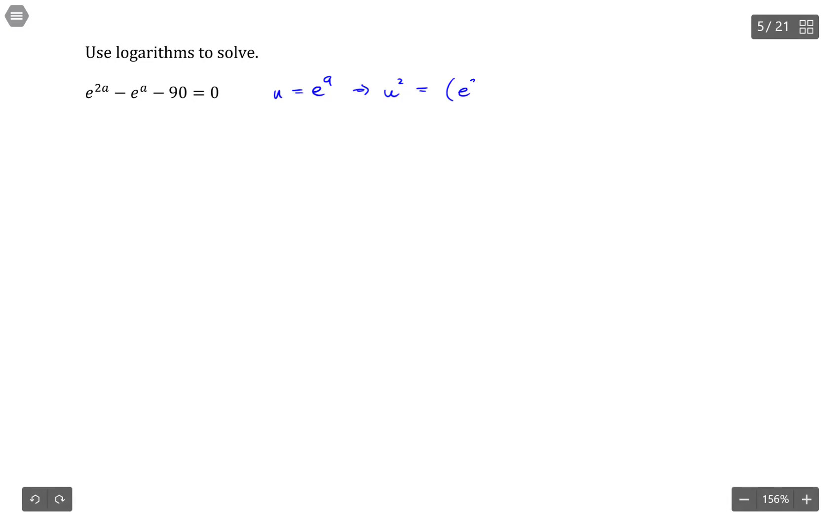So that would be e to the a squared, and that in fact is what we have, because you can simplify this by multiplying the exponents, so this would be e to the 2a.